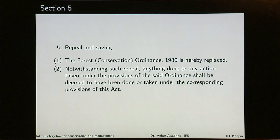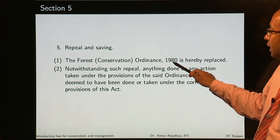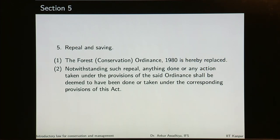Section 5 talks about repeal and saving. The Forest Conservation Ordinance 1980 is hereby repealed. Before the Forest Conservation Act, the government had promulgated the Forest Conservation Ordinance in 1980 — it found the matter so urgent it could not wait for parliament to be in session. That was the kind of urgency felt by looking at the rate at which forests were getting diverted. Anything done or any action taken under the provisions of the ordinance shall be deemed to have been done under the corresponding provisions of this act.